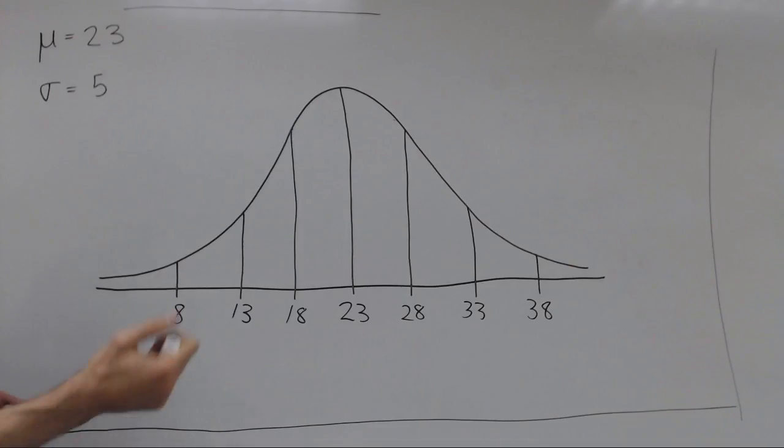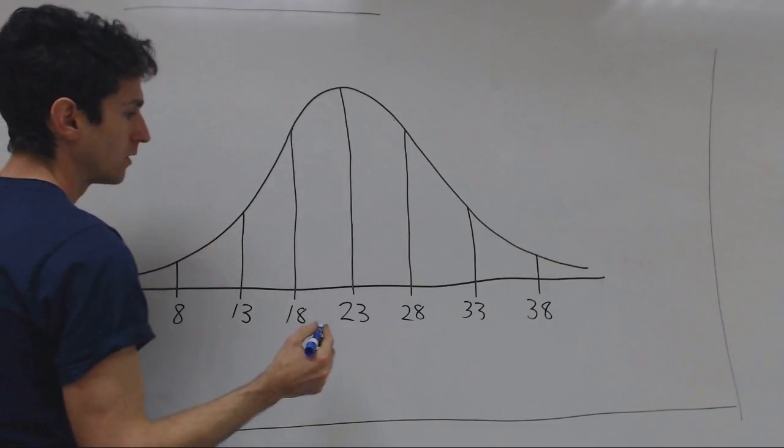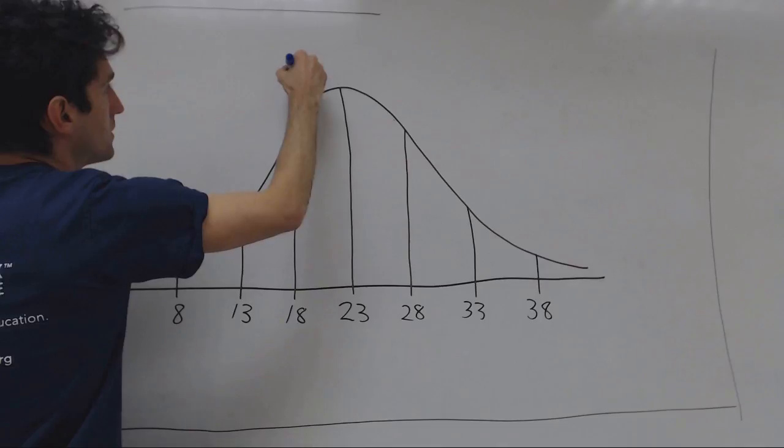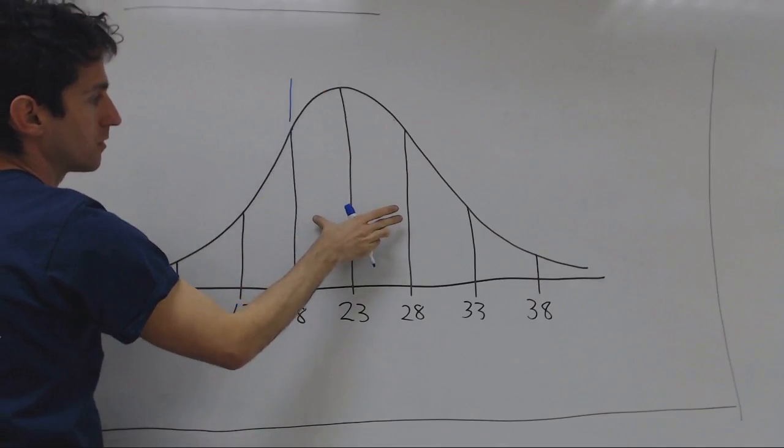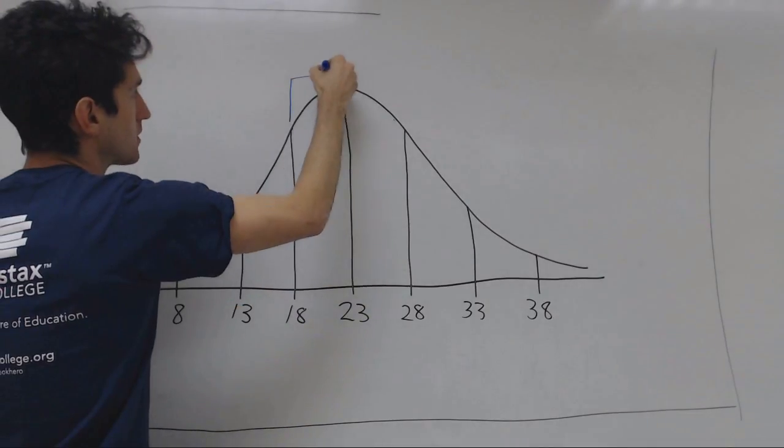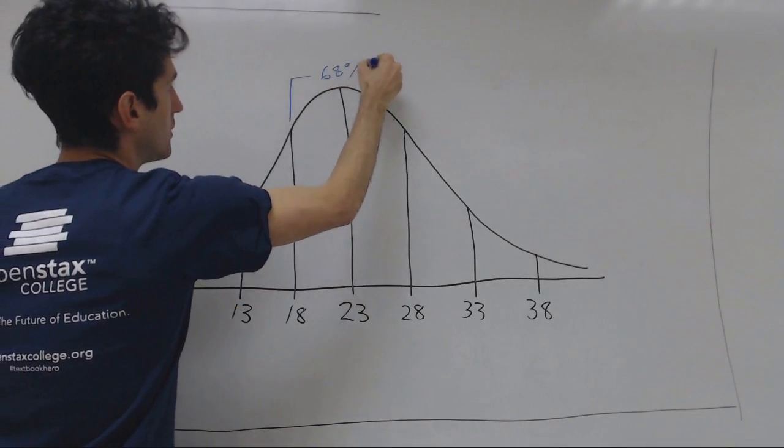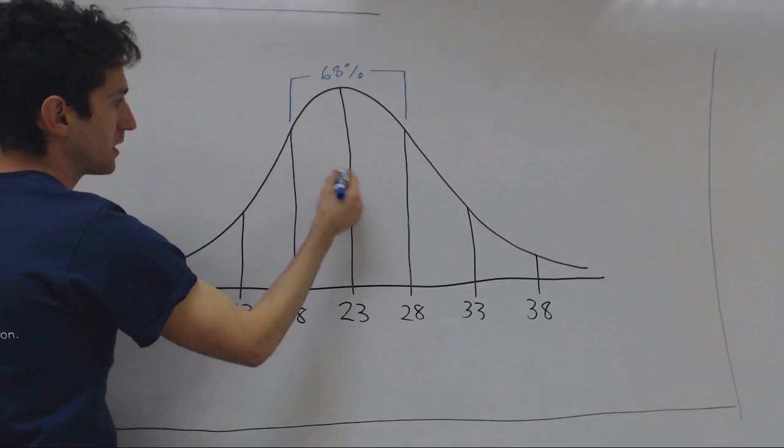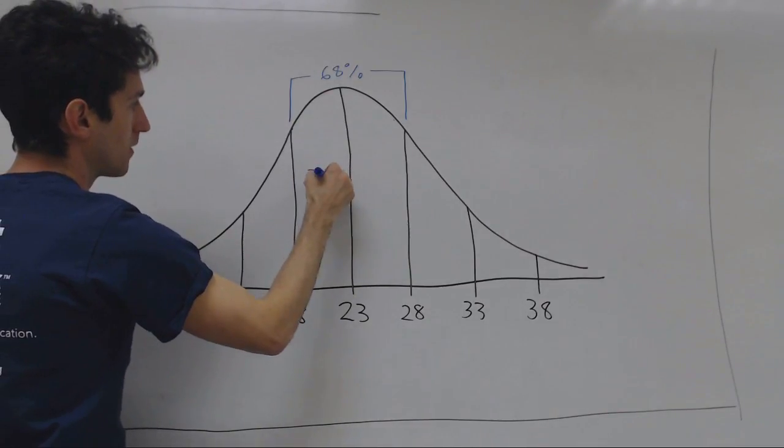According to the empirical rule, the distance, or the area, one standard deviation above and below is 68% of the total area. That means that each of these pieces, because of the symmetry, are 34%.